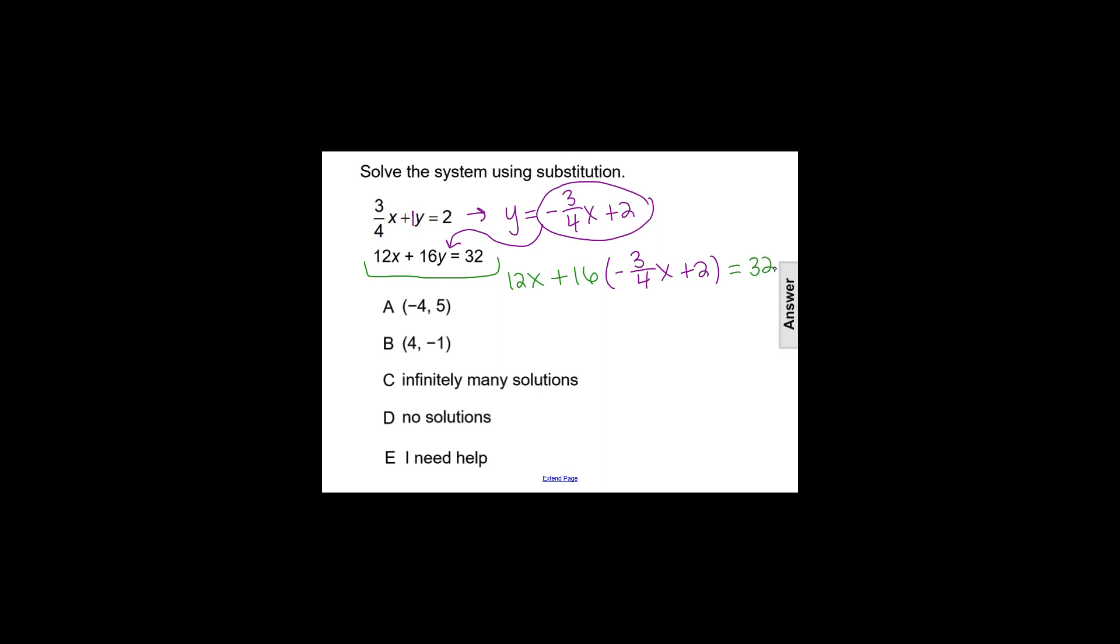So we can try to solve for x. We'll distribute 16, so that will give us 12x, and then minus, so 16 times negative 3 fourths is minus 12x, and then plus 32 equals 32.